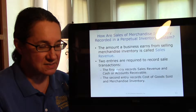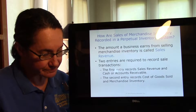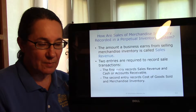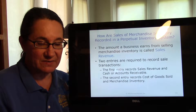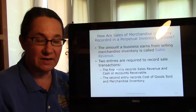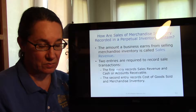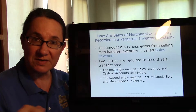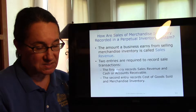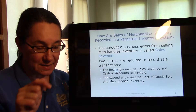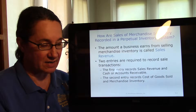We're going to start learning how sales are recorded in a perpetual inventory system. After a company buys merchandise inventory, the next step is to sell the goods. At the time of sale, two entries must be recorded in the perpetual inventory system. One entry records the sales revenue and the cash or accounts receivable at the time of the sale. The second entry records cost of goods sold — it debits the expense and reduces the merchandise inventory by crediting the asset.